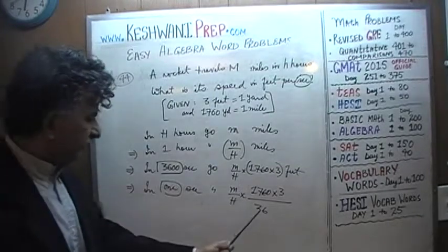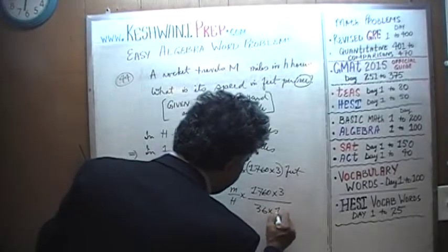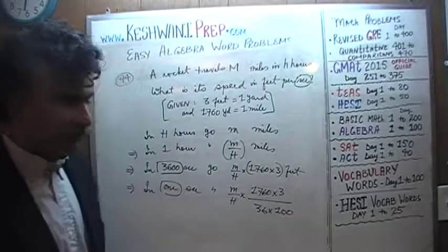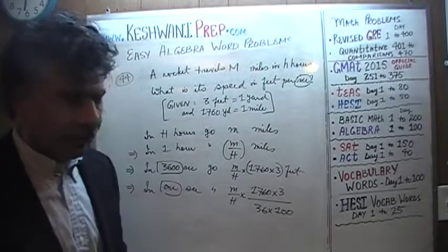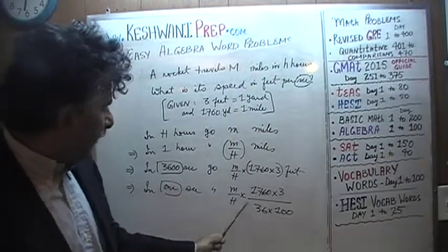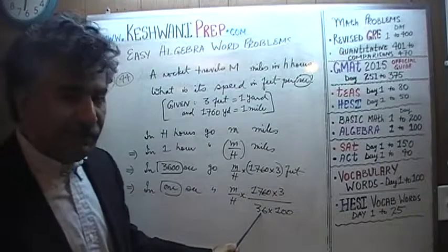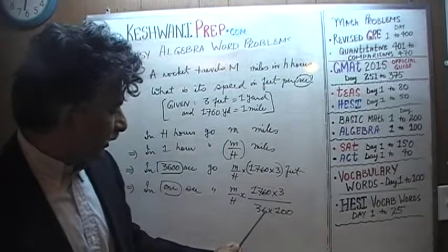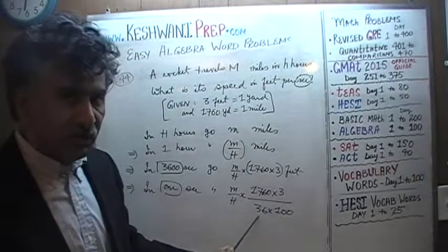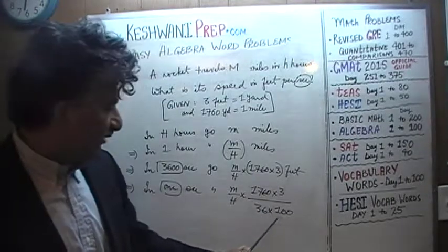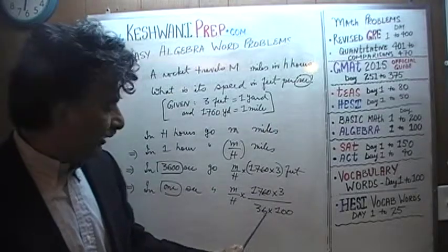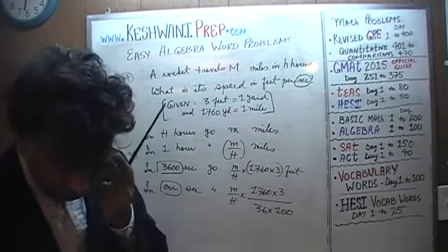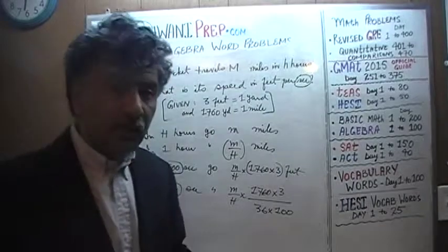We write 3600 as 36 times 100 because it's much easier to deal with 36 and 100 separately than to deal with 3600 as one big number. It will make our work easier.